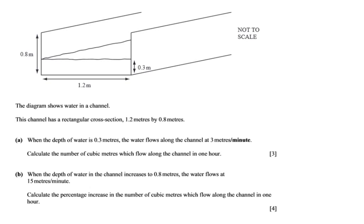Let's get started. The diagram shows water in a channel. This channel has a rectangular cross section of 1.2 meters by 0.8 meters, so that is indeed a rectangle. And then there is some water inside now. Let me highlight that with some blue. That's the water, and I can't see the rest because it's the side face of that channel.